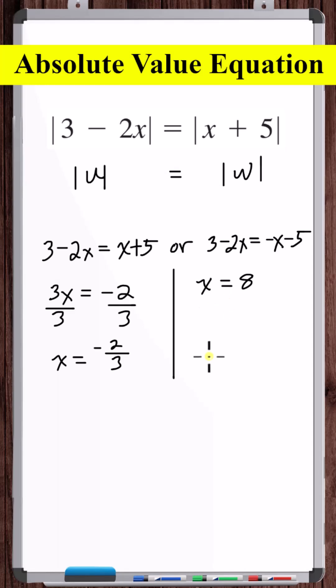equals 8. Now absolute value equations are one of the types of equations where you have to check your final answers. Even if you didn't make a mistake, you could still have an extraneous solution. So checking minus